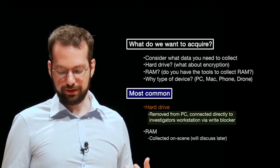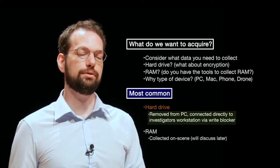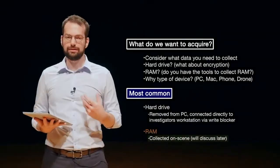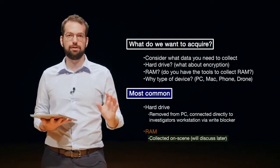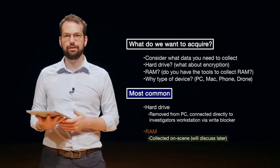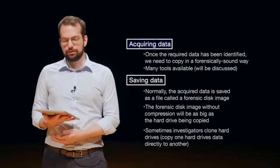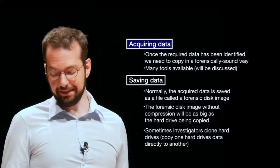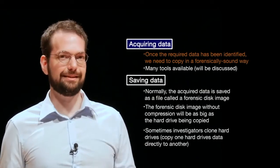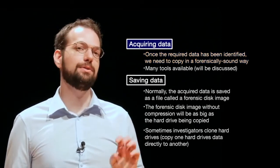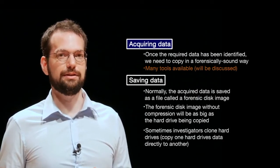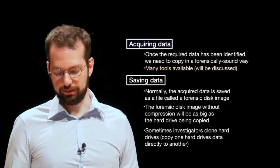We remove the drive from the PC and connect it directly to the investigator's workstation via a write blocker. Remember, you always want to try to use a write blocker when you can. RAM must be collected on scene — the computer essentially has to be on to collect random access memory, so we normally do this during first response. We'll talk about RAM acquisition in later lectures. Once the required data has been identified, we copy it in a forensically sound way, using proper procedures and the many digital forensic tools available to help us do that.